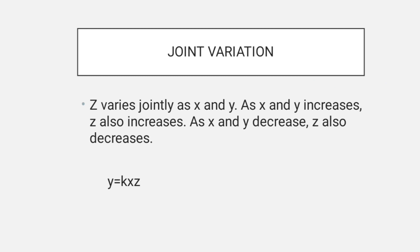Joint variation. Z varies jointly as X and Y. As X and Y increase, Z also increases. As X and Y decrease, Z also decreases. The formula is Z equals K, the constant, times X times Y.